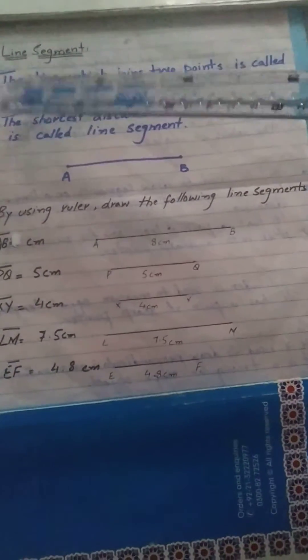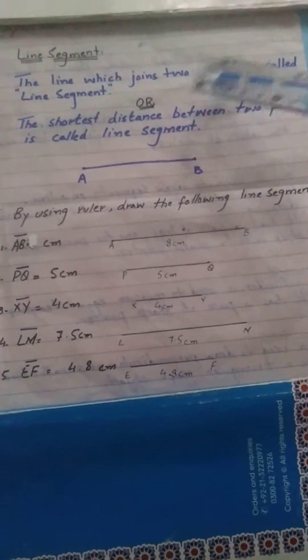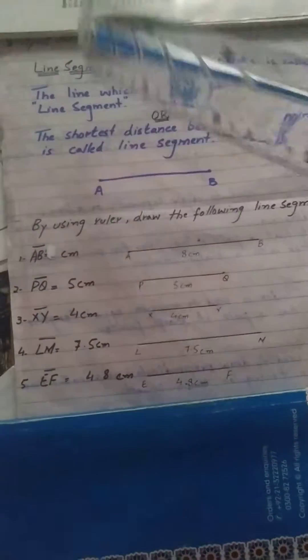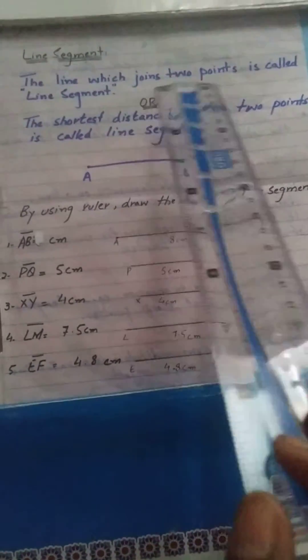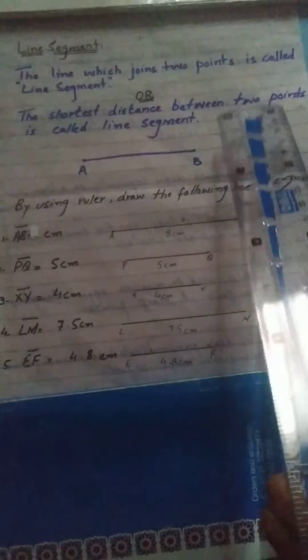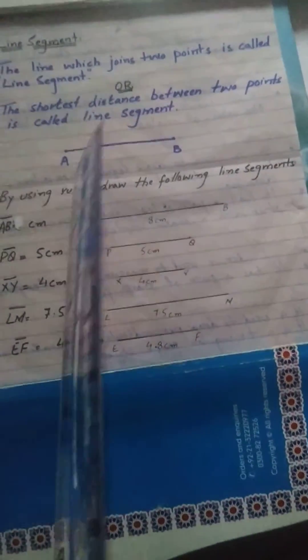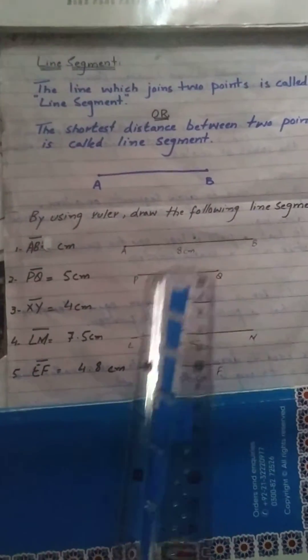The definition of line segment: the line which joins two points is called a line segment. Or, the shortest distance between two points, point A and point B, is called the line segment.